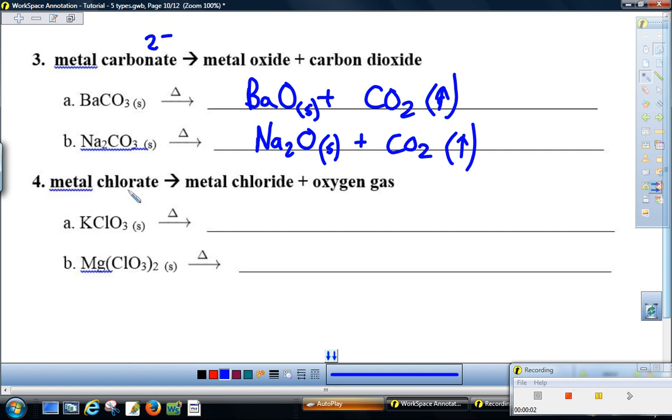Metal chlorates—chlorate has a minus one charge—will separate. Chlorine will stay with the metal, oxygen will split off to form oxygen gas. We have KClO3: K is plus one, chlorate is minus one, forming KCl (a salt, a solid crystal lattice at room temperature) and O2 diatomic. This isn't balanced, so we would need two, two, three to balance it.